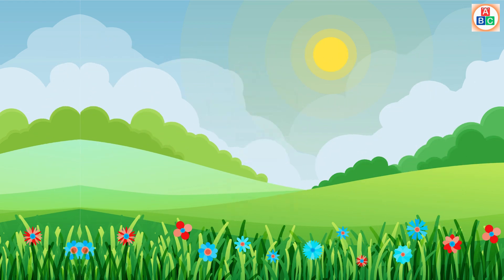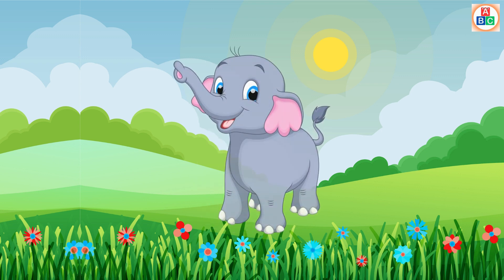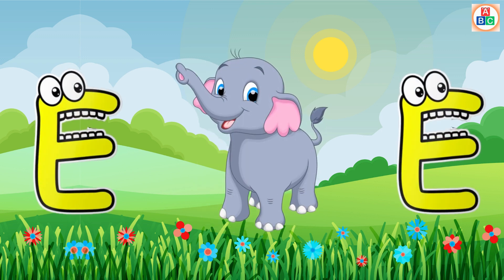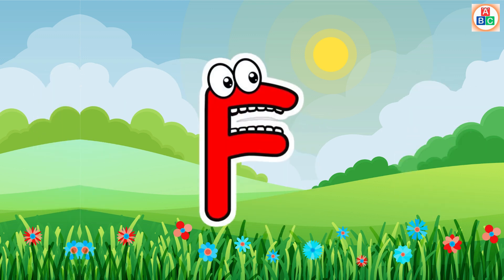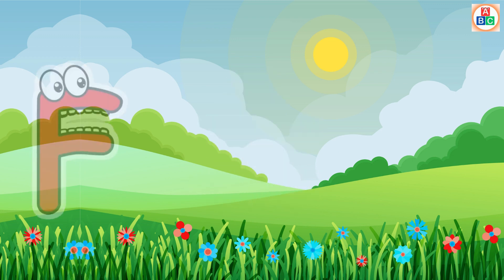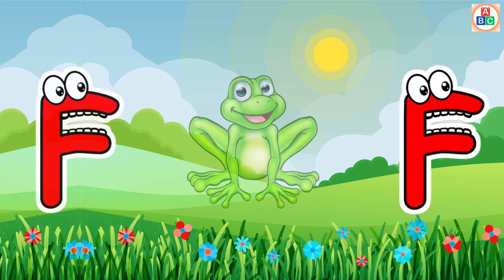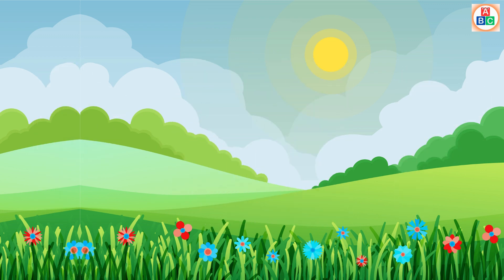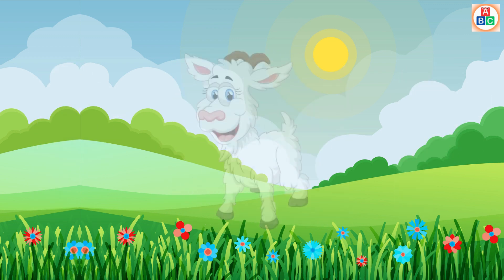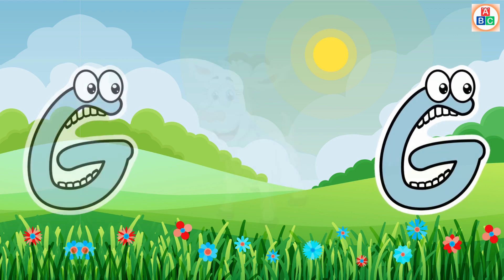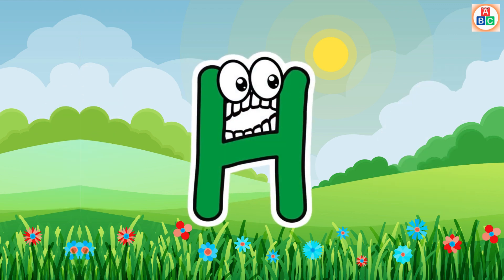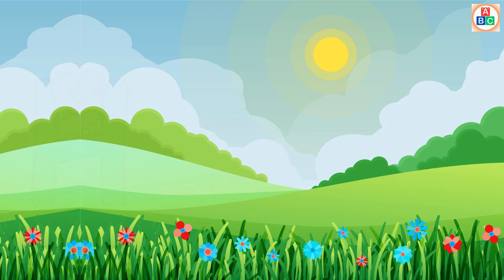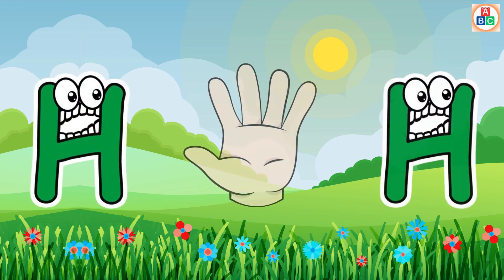E is for Elephant, E-E-Elephant. F is for Frog, F-F-Frog. G is for Goat, G-G-Goat. H is for Hand, H-H-H-Hand.